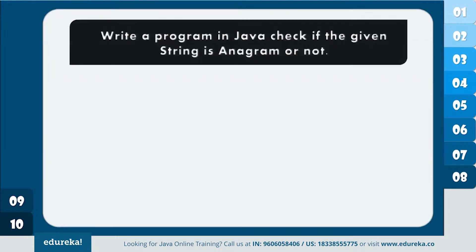Let's see the next program: write a program in Java to check if the given string is an anagram or not. An anagram is a word or phrase formed by rearranging the letters of a different word or phrase, typically using all the original letters exactly once. For example, from the word 'listen' you can make another word 'silent.' Let's see how to do that with the help of a code.